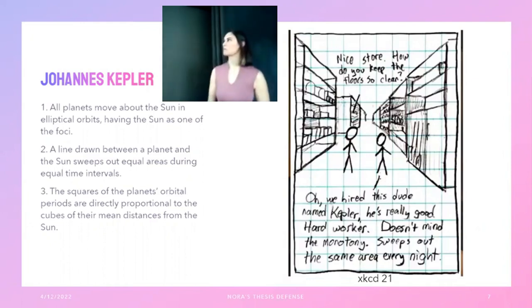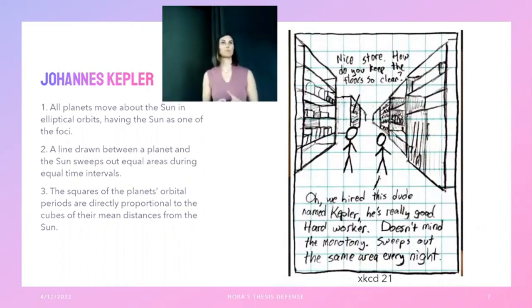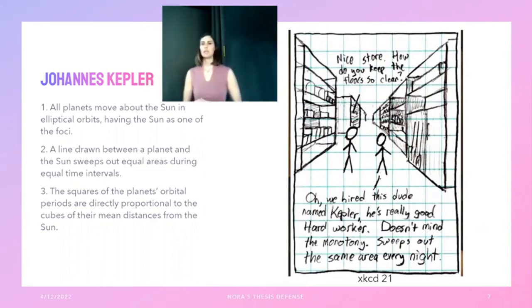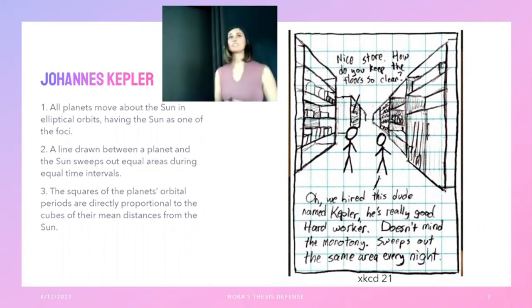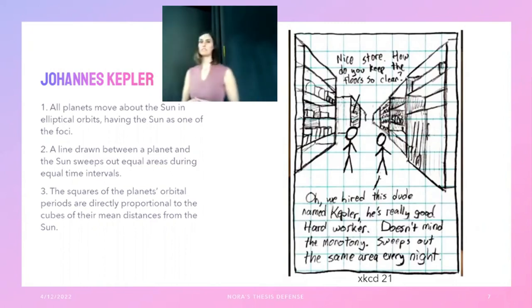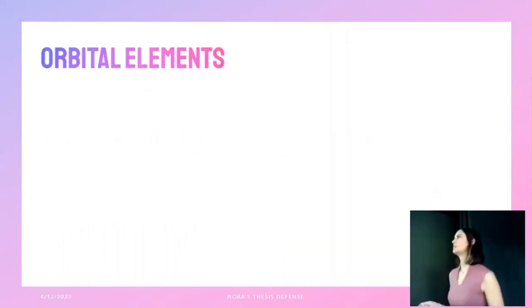This vision that Kepler had of elliptical orbits — which was a really new idea at the time — is still used today. In this talk I'll frequently be referencing what are called Keplerian orbital elements, so I'll give you a quick rundown of what those are.